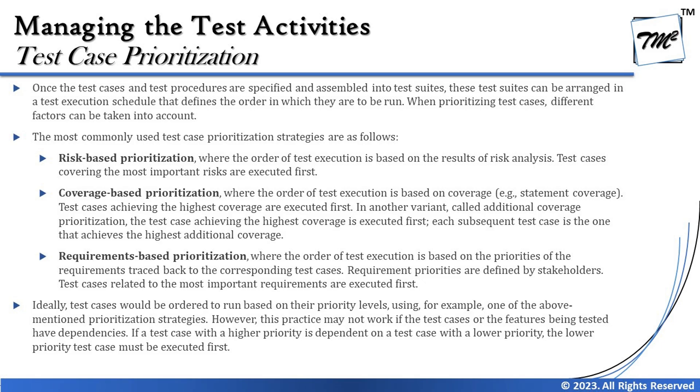The most commonly used test case prioritization strategies are as follows. First, we have risk-based prioritization, where the order of test execution is based on the results of risk analysis and test case coverage — the most important risks are executed first. Based on the criticality and level of risk, we determine which test cases to execute first: highest risk first, then medium, then low. This is a common practice in organizations today — risk analysis is used as part of test case prioritization.